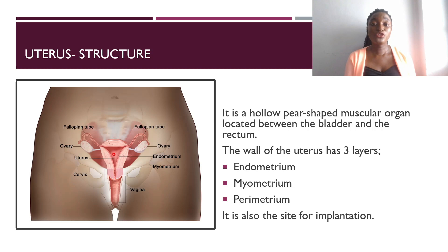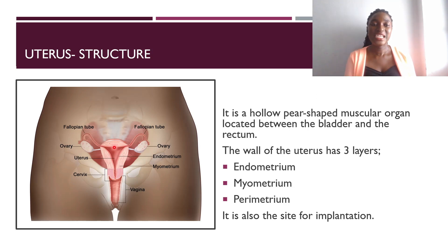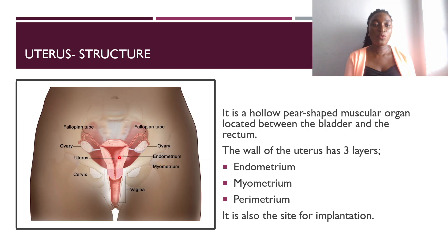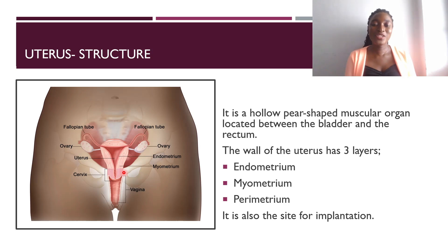Moving to the uterus — it cushions and holds the baby in place as it grows. This is the part that houses the baby throughout its development from the blastocyst until it is pushed out. The placenta forms and attaches to the uterine walls, but prior to that, implantation occurs inside the uterus. The uterus is a hollow, pear-shaped muscular organ located between the bladder and the rectum. Its walls have three layers: the inner endometrium, the middle myometrium, and the outer perimetrium, which attaches to other parts of the pelvis.